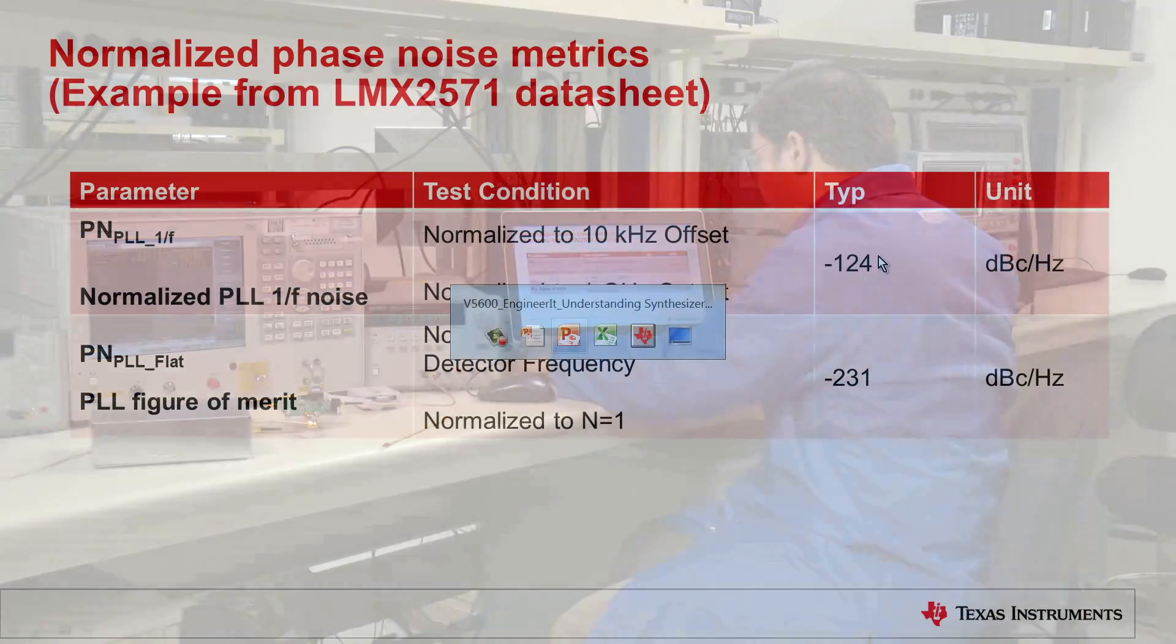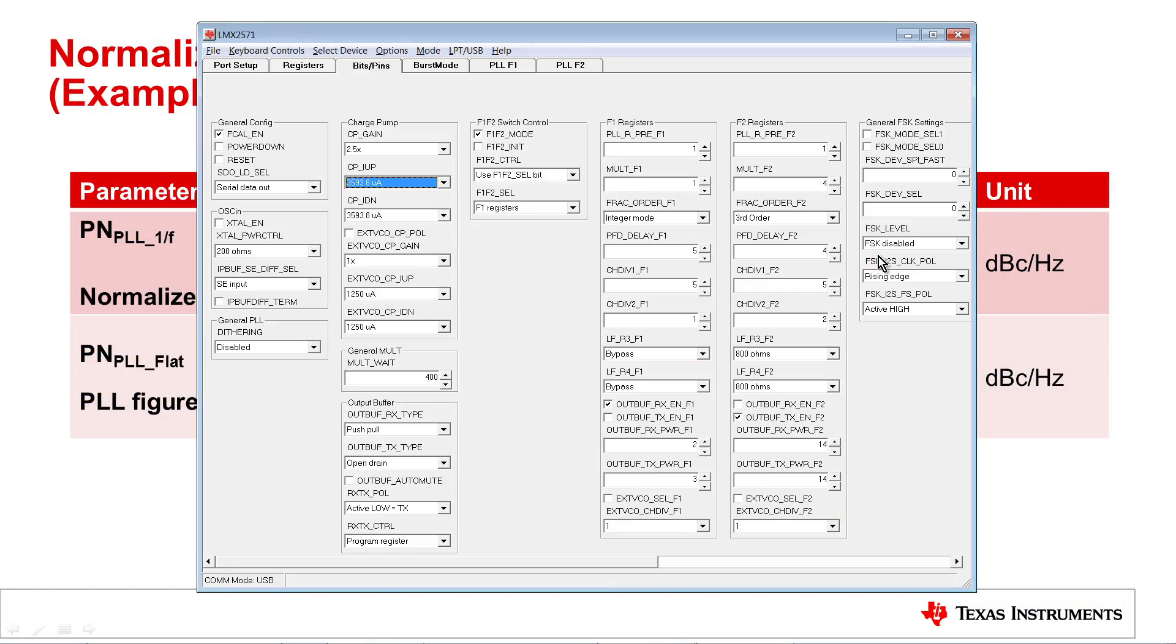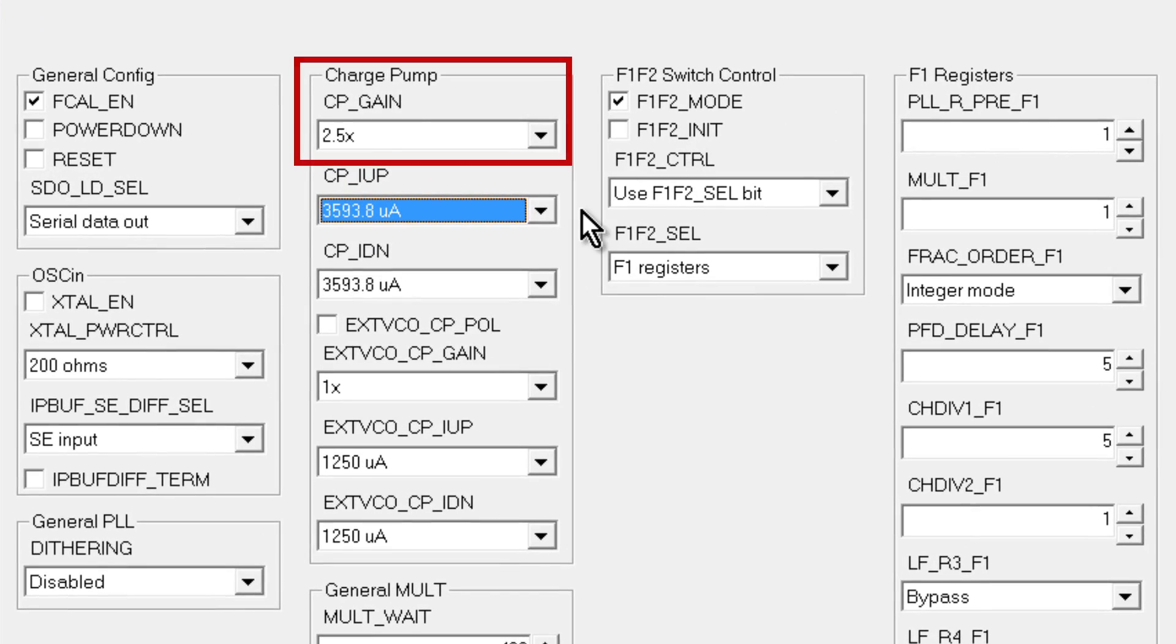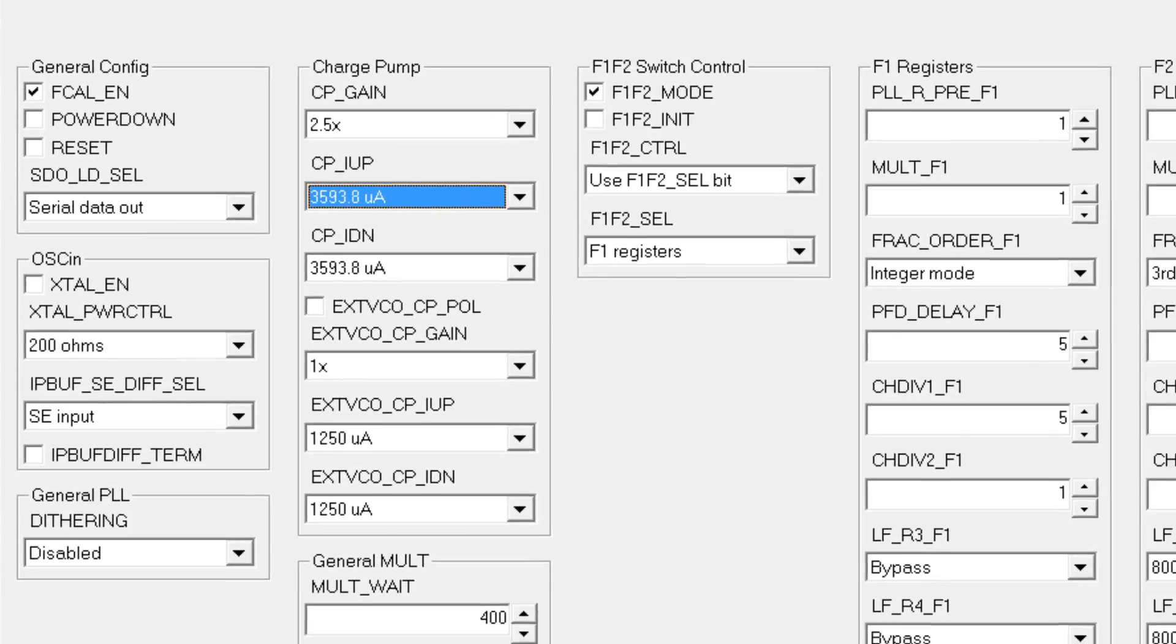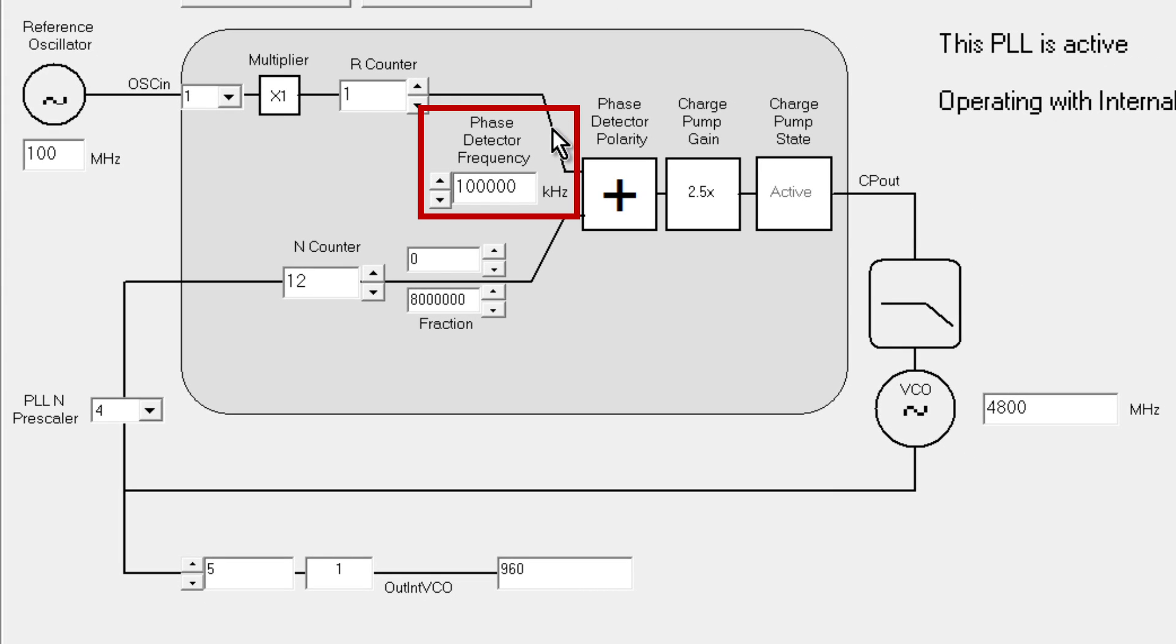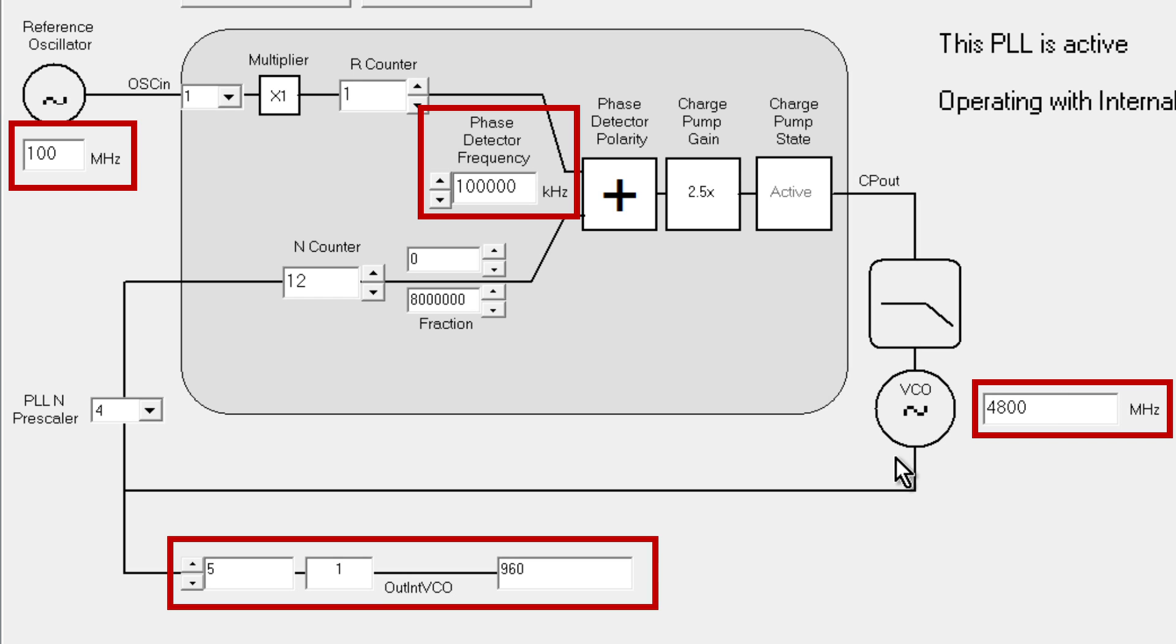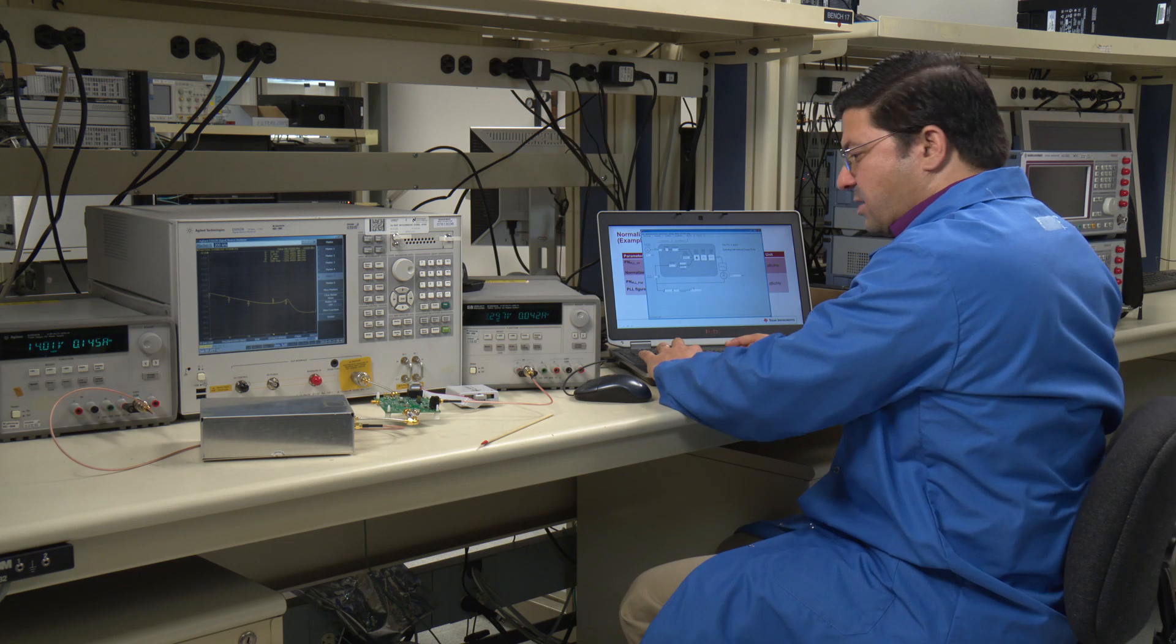So I have my code loader software here, which loads all LMX and LMK devices. Here you can see I've set the charge pump to a very high gain. I've used a high phase detector frequency. I have a 100 MHz input, 4800 MHz output, dividing by 960 MHz output. So let's go look at our setup here.